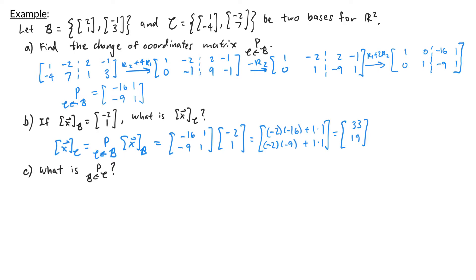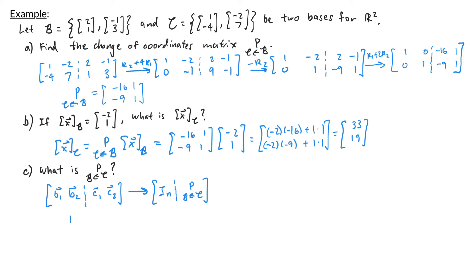In part c, we're asked to find the change of coordinates matrix P from C to B — going the other way around. There are two ways to do this. One, make the augmented matrix [b1, b2 | c1, c2] and row reduce it to get the identity on the left and P_{C→B} on the right. Alternatively, since we're going backwards, we can just take the inverse of P_{B→C}: P_{C→B} = (P_{B→C})^{-1}.